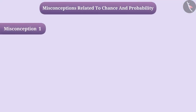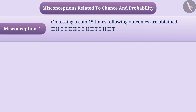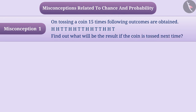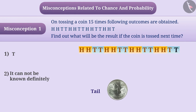Misconception 1. On tossing a coin 15 times, following outcomes are obtained. Find out what will be the result if the coin is tossed next time. Some children see the pattern and think that next time outcome T will be obtained. So they give option 1 as an answer, which is the wrong answer. In such an experiment, it is wrong to predict the outcome based on observations.